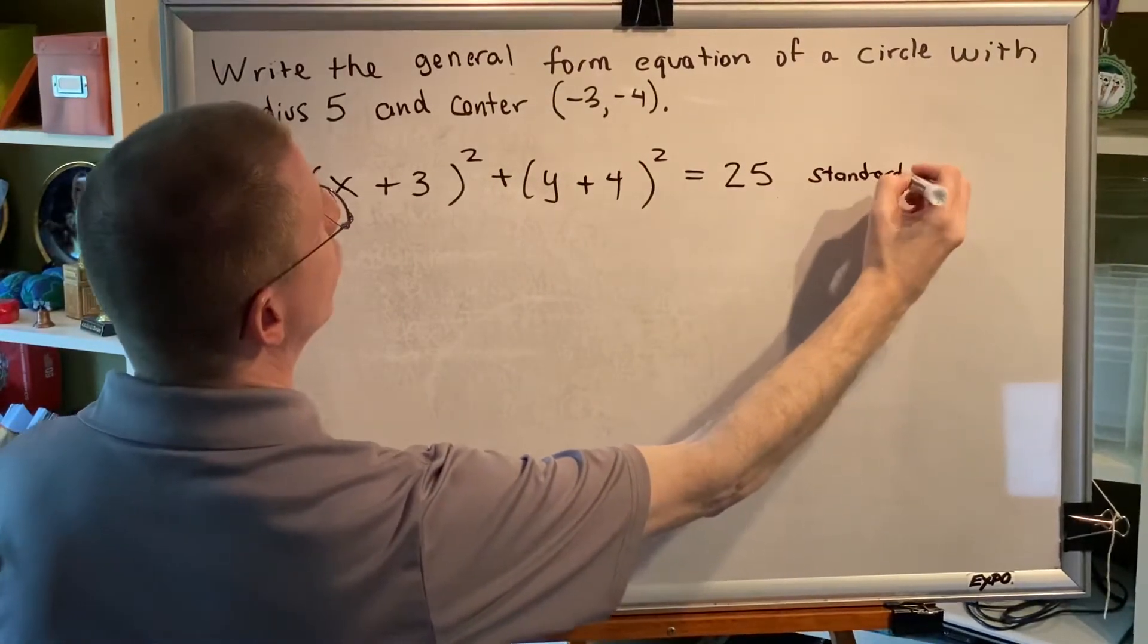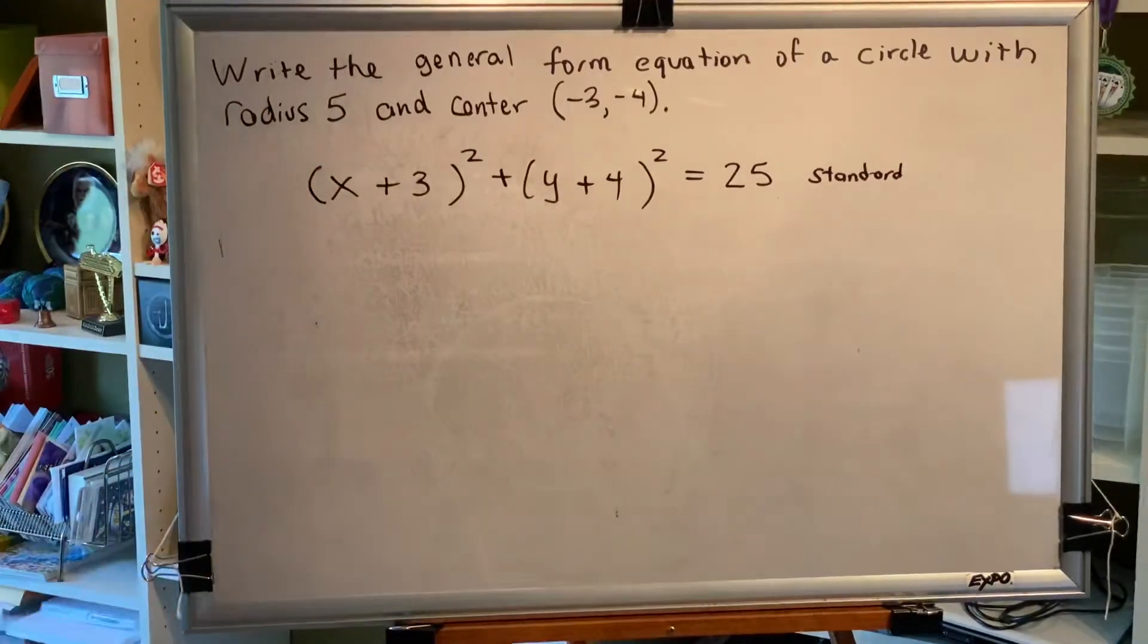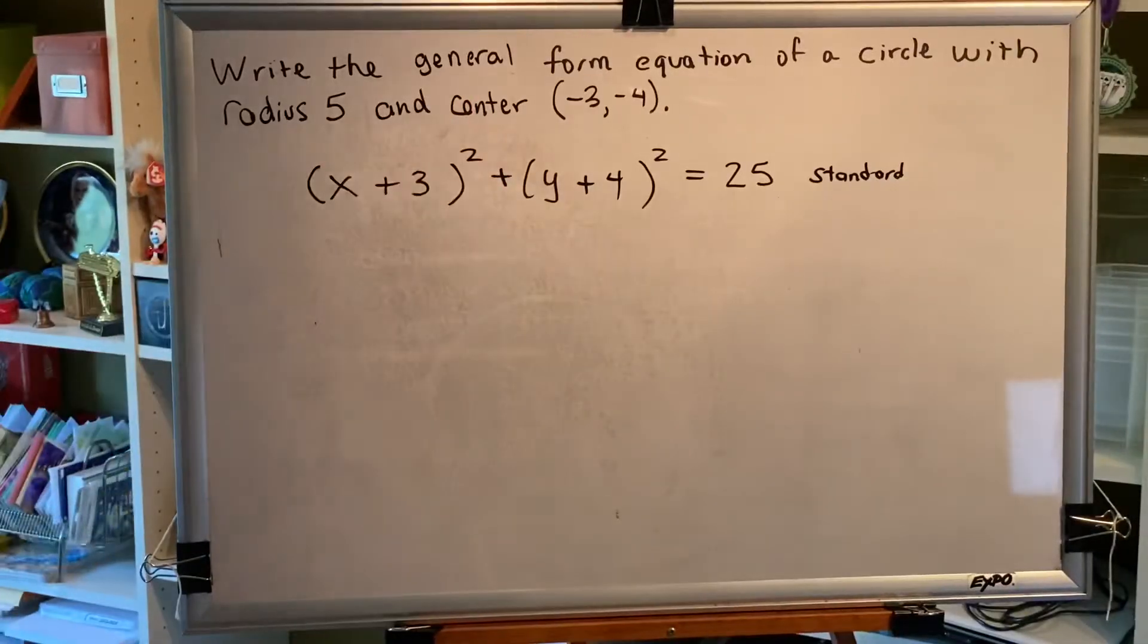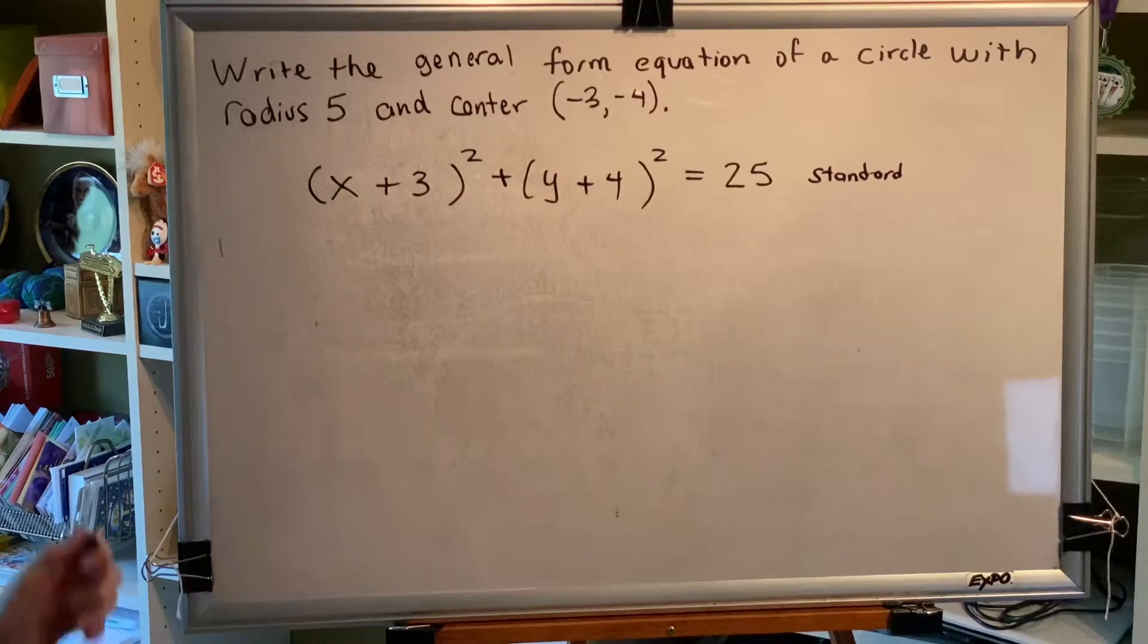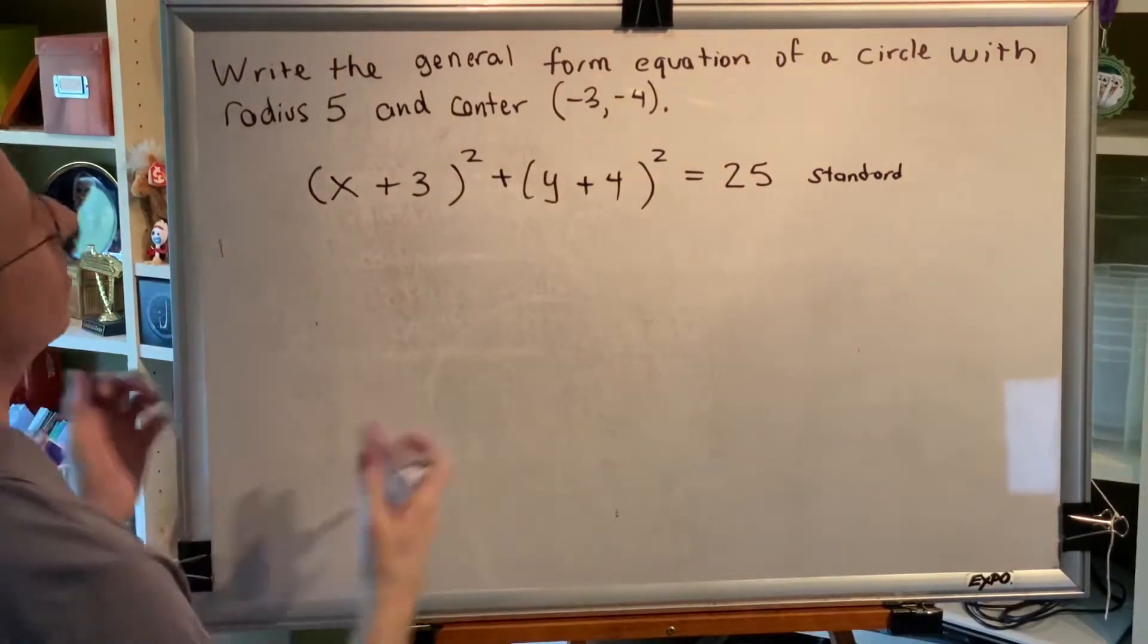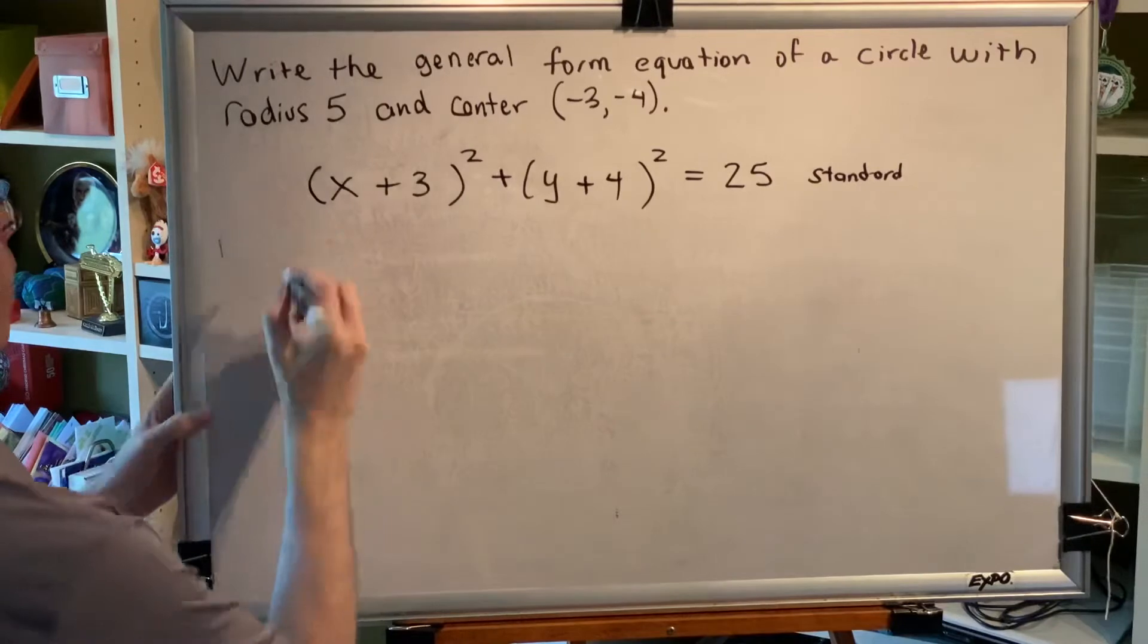But the instructions for this problem say that I need to write the general form. So in order to do that, we just have to get rid of all of the parentheses and move all terms to the left side, leaving 0 on the other.